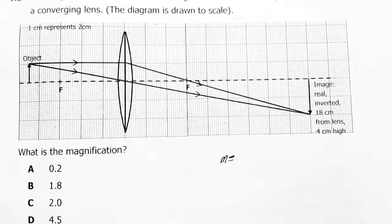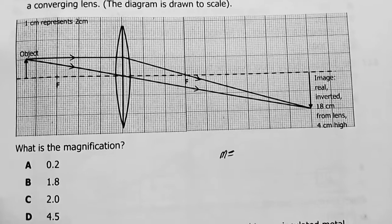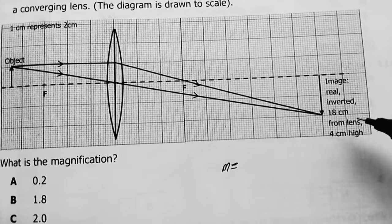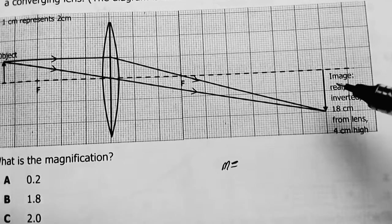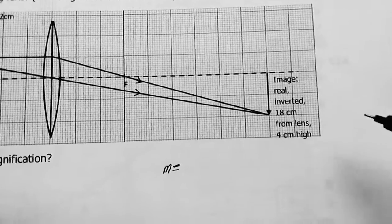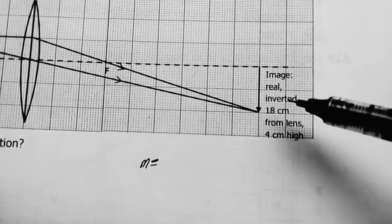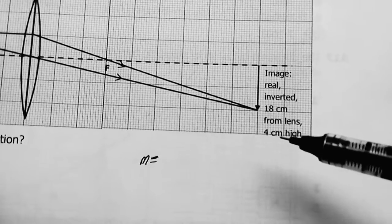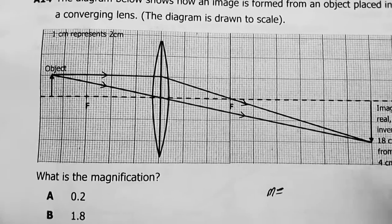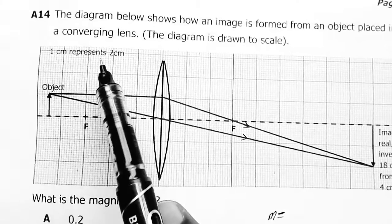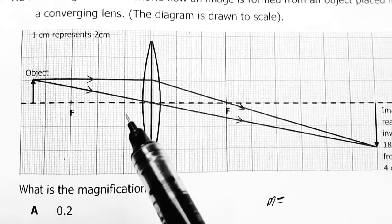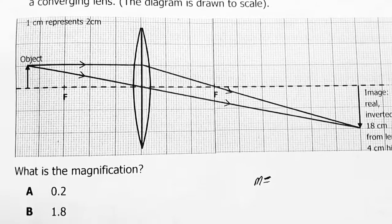This is all about linear magnification. They have said the diagram is drawn to scale. You can easily see the image is real, inverted, 18 centimeters from the lens, 4 centimeters high. Let's see: one centimeter represents two centimeters. That's our scale.